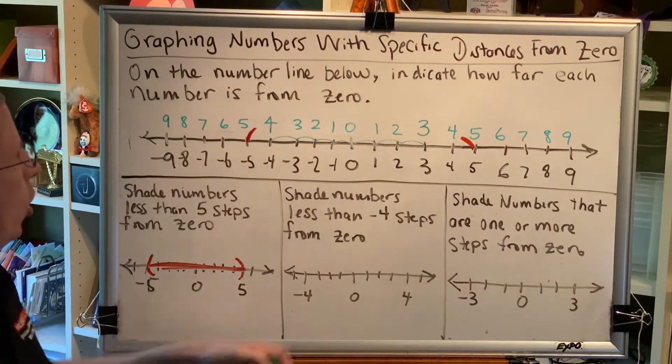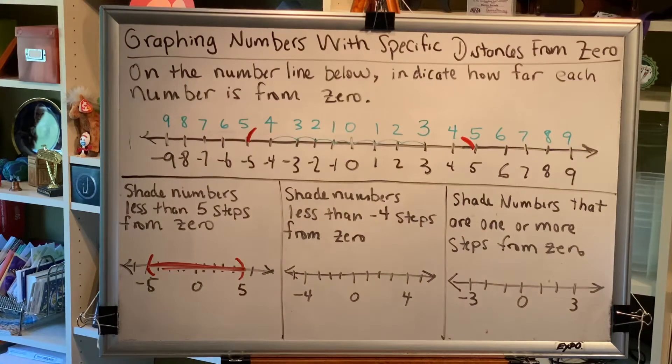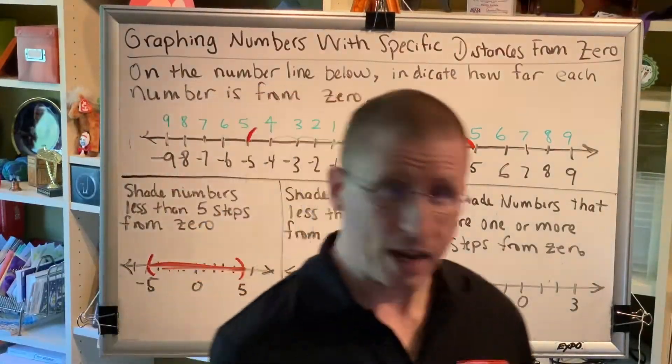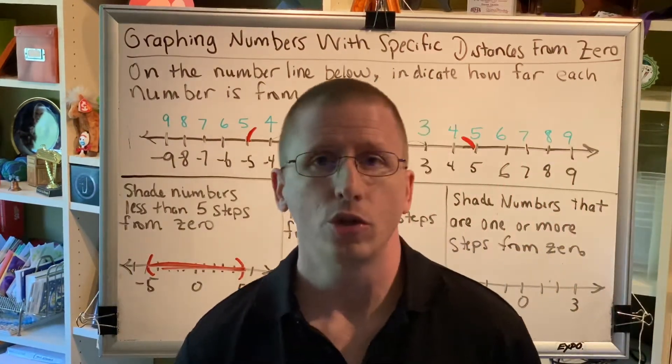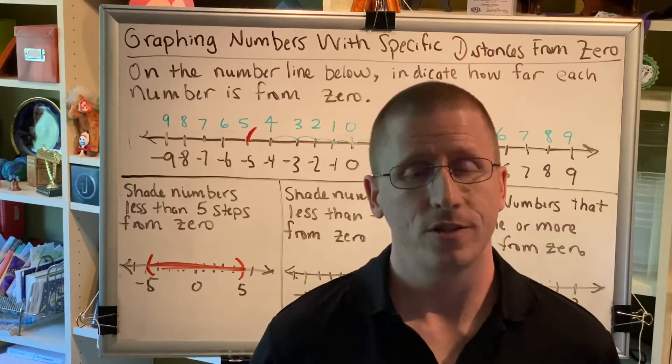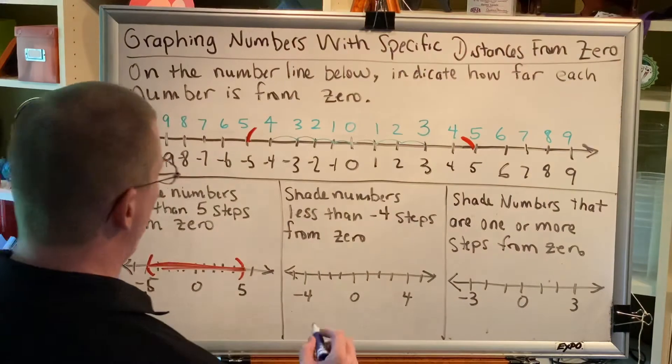Let's move on to our next problem. Shade the numbers that are less than negative 4 steps from zero. Well, if you're less than negative 4, then you must be negative. For example, negative 5 or negative 6. So how do you shade something that's negative 6 steps away from zero? The answer is, you can't. The answer to this problem is no solution.